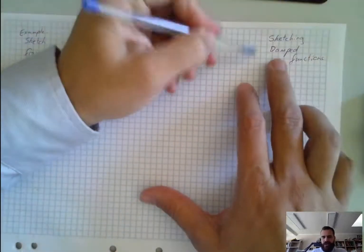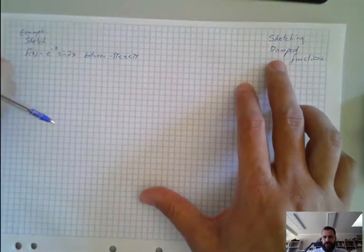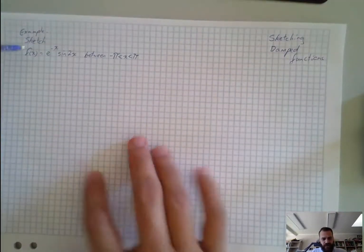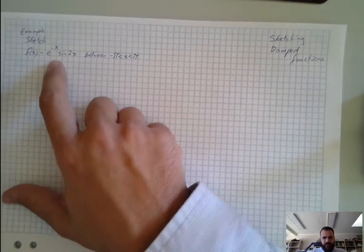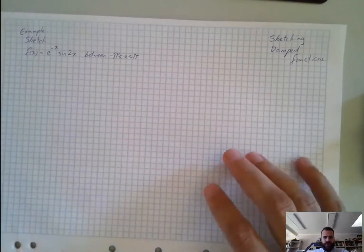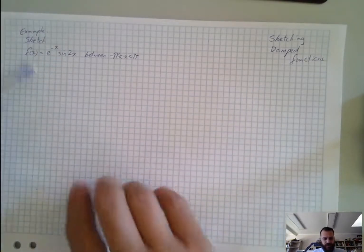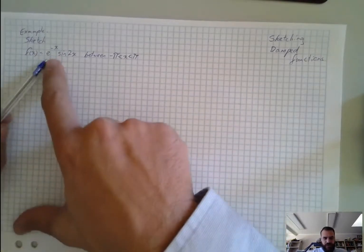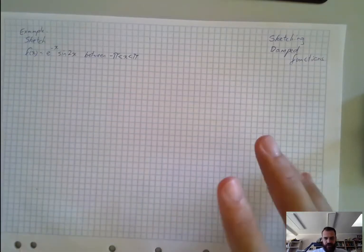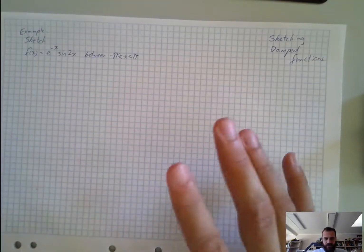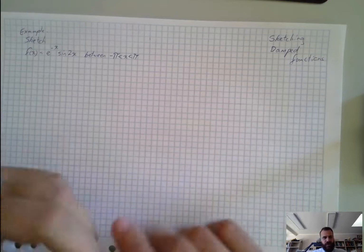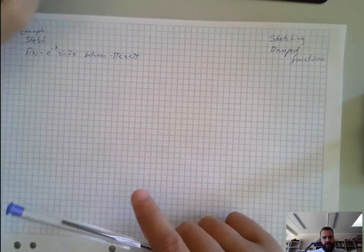In this one I'm going to be sketching damped functions. Now you've seen a damped function before, we've talked plenty about exactly what they are. So we're just going to jump straight into sketching one. The way I'd like to do this is create a rough one first and then go from there.